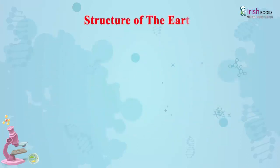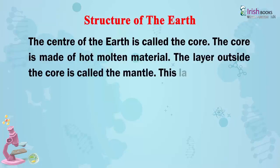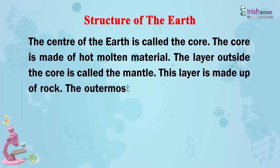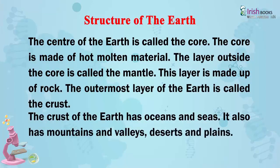Structure of the Earth. The center of the earth is called the core. The core is made of hot molten material. The layer outside the core is called the mantle. This layer is made up of rock. The outermost layer of the earth is called the crust. The crust of the earth has oceans and seas. It also has mountains and valleys, deserts and plains.